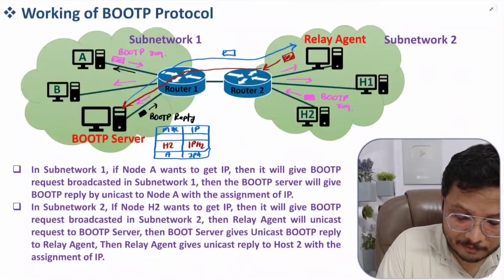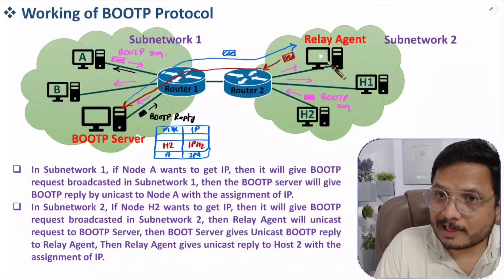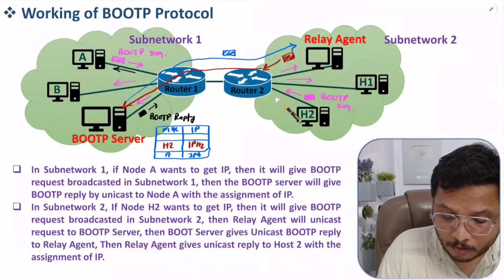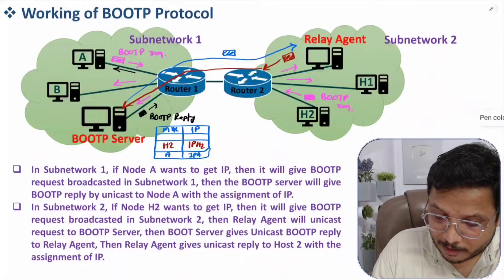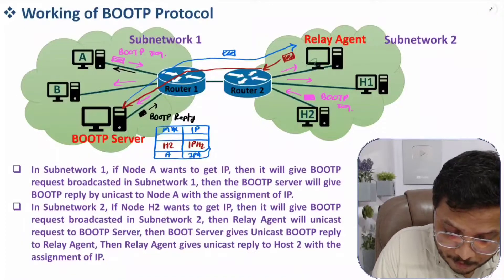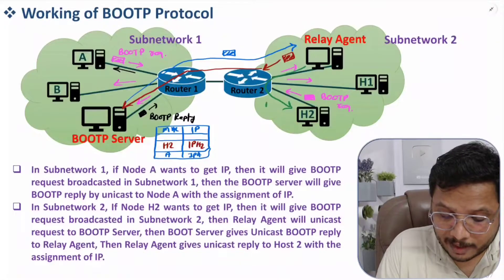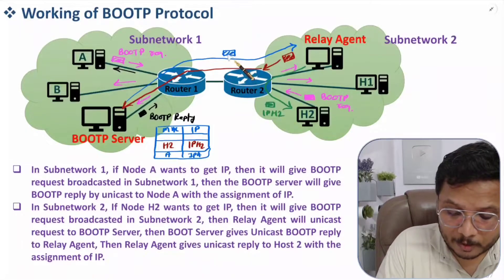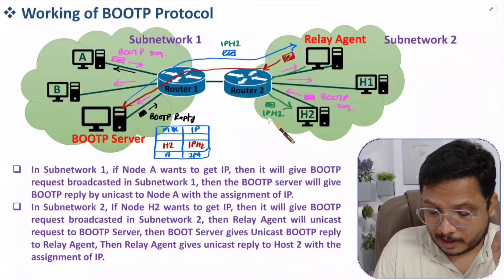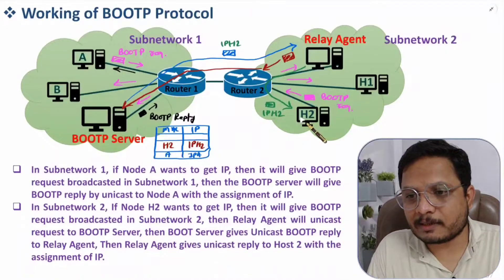The reply frame from the BOOTP server contains the IP assigned to Host 2. Once that frame reaches the relay agent, the relay agent forwards a unicast frame to Host 2 containing its IP address. Now Host 2 has an IP address and can communicate on the network.